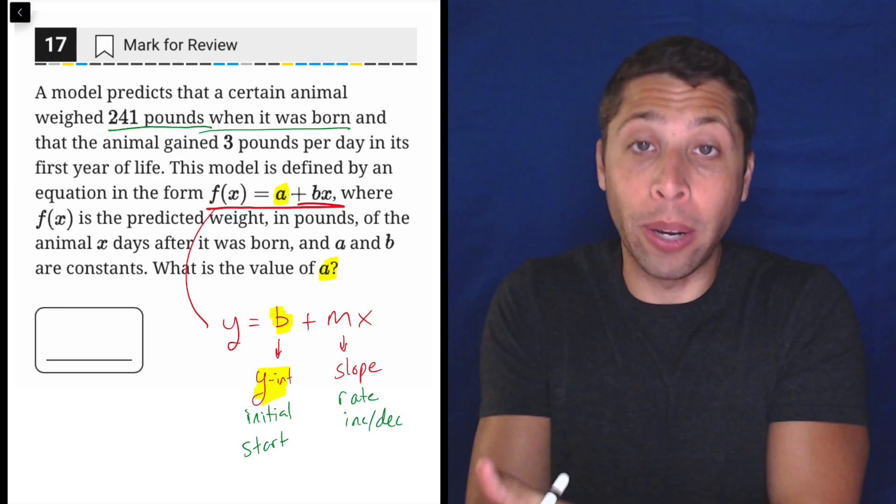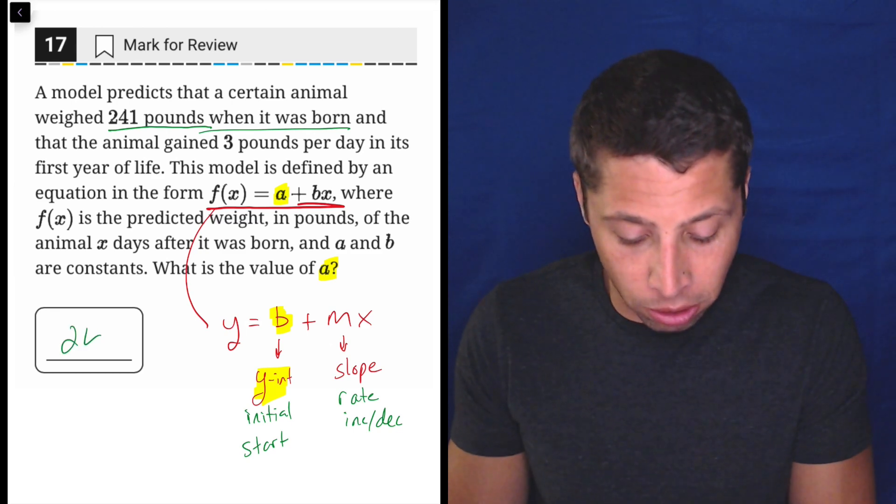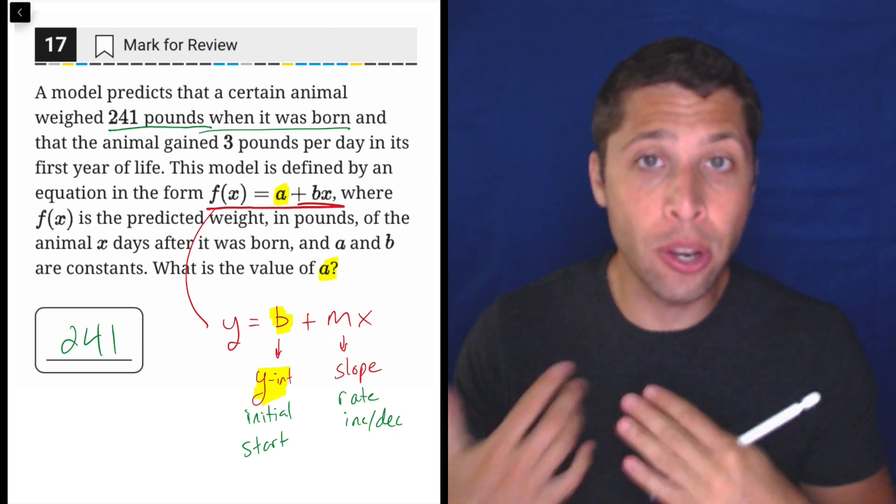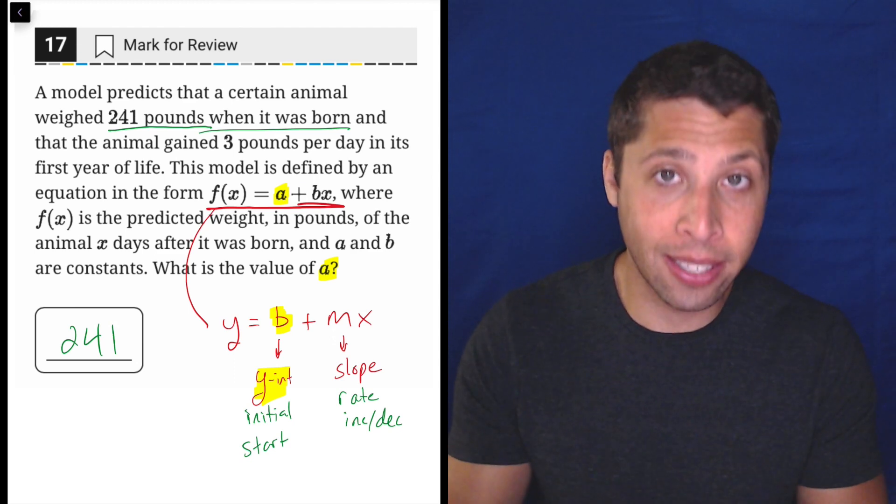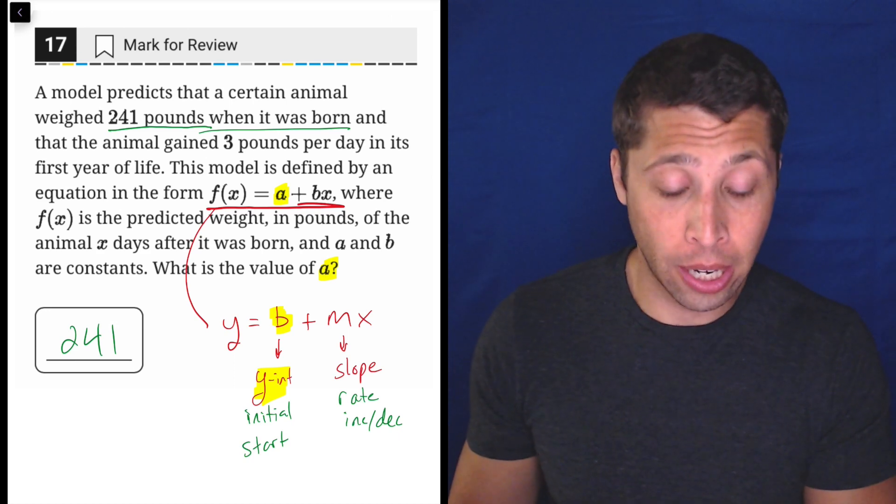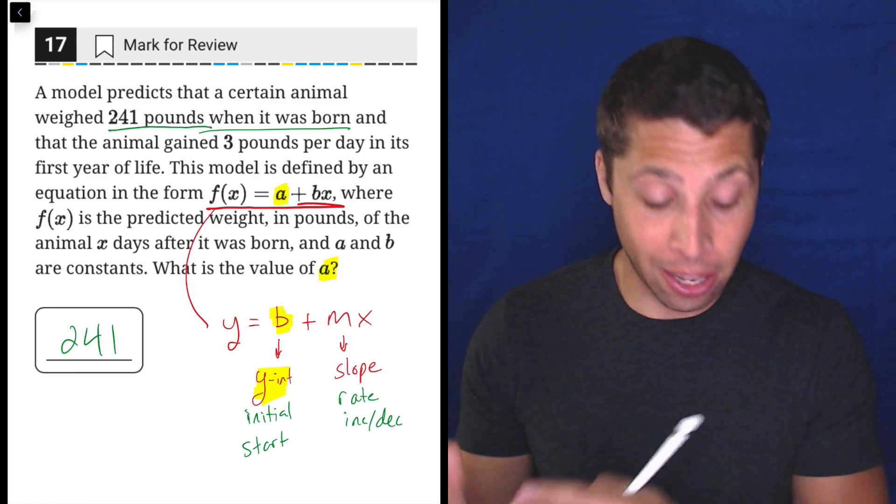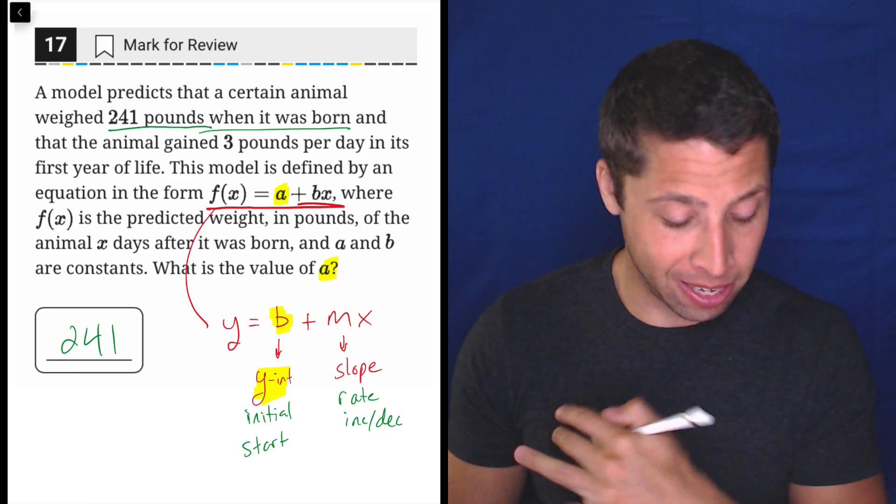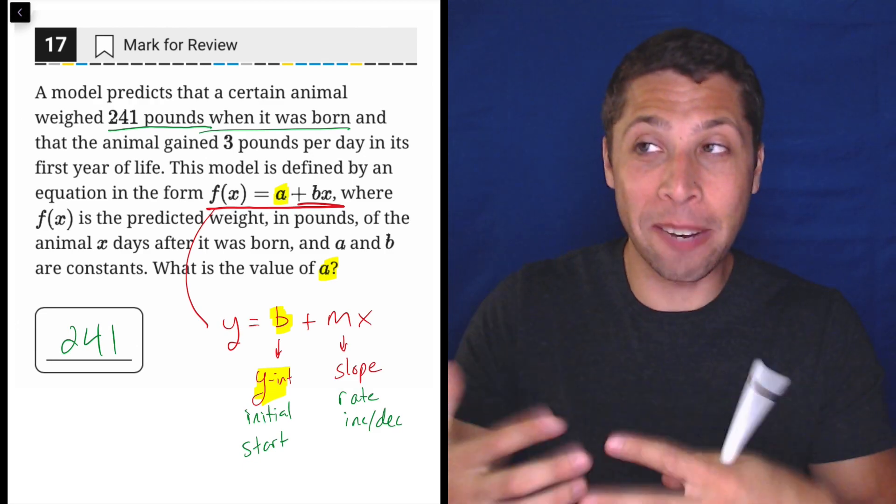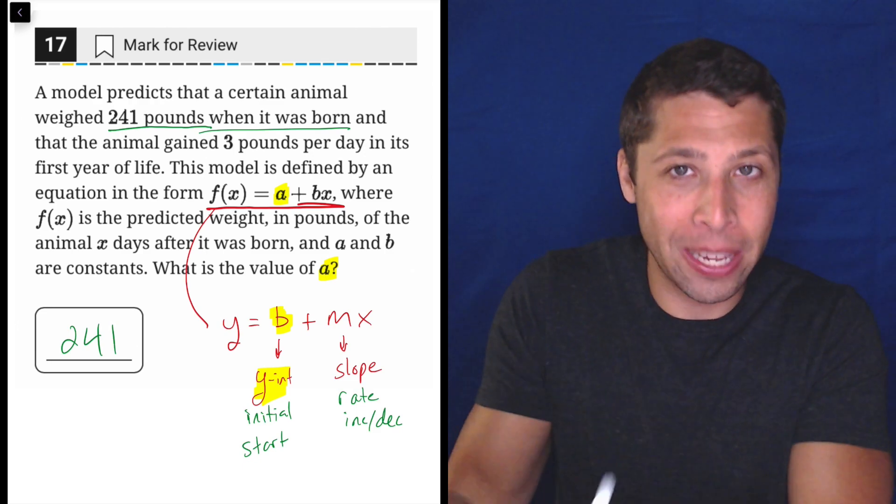The model predicts that a certain animal weighed 241 pounds when it was born. So that's its zero point, right? So 241 is just our answer here. They're asking for the y-intercept. It's just about knowing how that concept sounds when we put it into a real-world story. It's very common that you're going to have this kind of initial start. Maybe they don't use those exact words, but it's going to be something like, here's where it began.